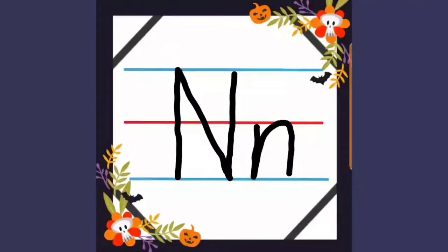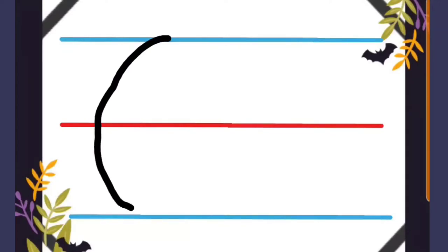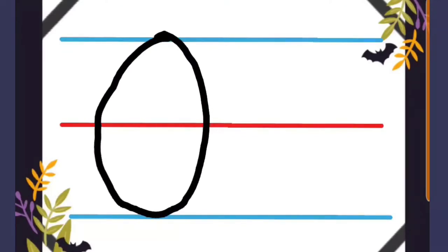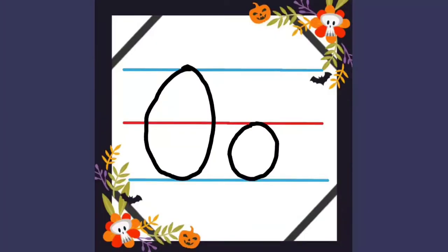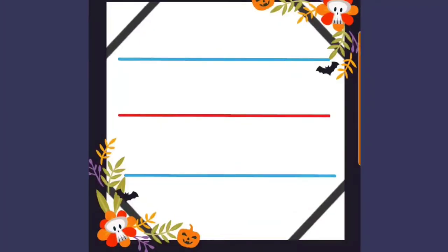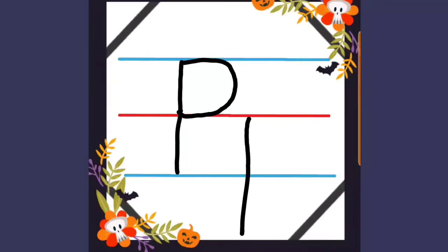For small letter N, just make a straight line down, and jump. For the baby, make a straight line going down, and curve line going to the red. Make a straight line going down, and curve line.